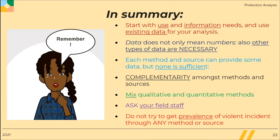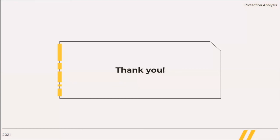In summary: start with identifying use and information needs, and use existing data first for your analysis. Only collect new data if gaps are not filled through secondary data. Data does not only mean numbers — numbers and percentages are useful, but other types of data are also necessary. Each method and source can provide some data, but none is sufficient. Methods and sources are complementary, and you should use all data from all relevant methods and sources. Use and mix qualitative and quantitative methods to obtain a solid basis for your analysis. Never forget that your field staff has a wealth of knowledge on the situation that you can tap into if you know how to ask and what to ask them. Do not try to get prevalence of violent incidents through any method and source.